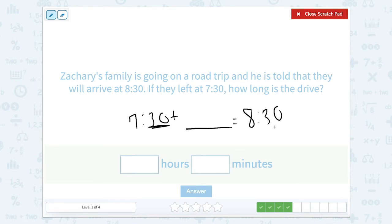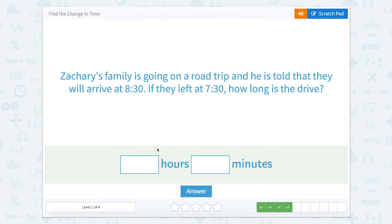Well, if I look here, the minutes are the same. So we know that there weren't any extra minutes. So we can kind of forget about those for a second and focus on the hour. If we're going from seven o'clock to eight o'clock, how many hours are in between? Well, that would just be one hour. So the length of the car ride was one hour and zero minutes.